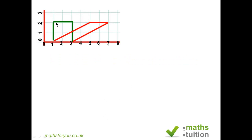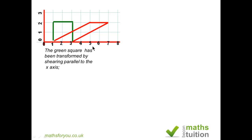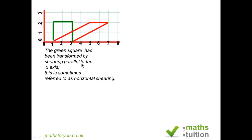This diagram shows the object in green being transformed by shear parallel to the x-axis. The coordinates of the object on the invariant line, or the x-axis, are the same as the coordinates of the parallelogram on the invariant line. So on the invariant line, the values or coordinates of the objects and the image do coincide. This is called horizontal shear, and the y values remain the same for a given point while the x values do move.